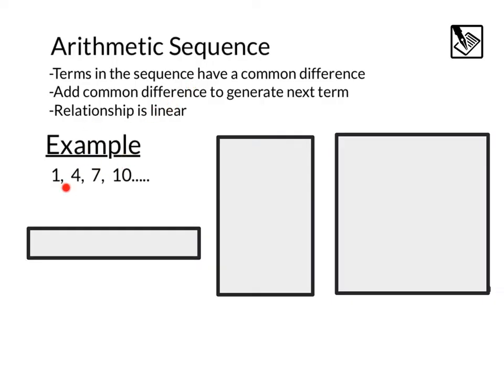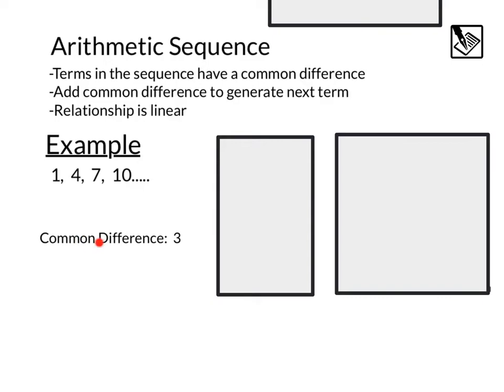Here's an example of the sequence. It's 1, 4, 7, 10, and if you are looking for a pattern here, you might notice that the common difference is 3. That means we do 1 plus 3 is 4, 4 plus 3 is 7, 7 plus 3 is 10, et cetera.